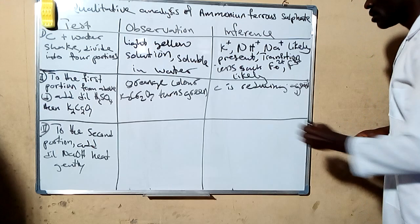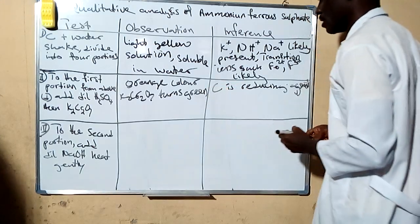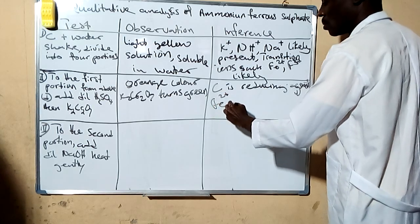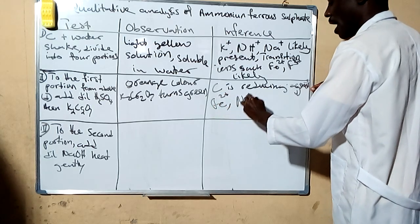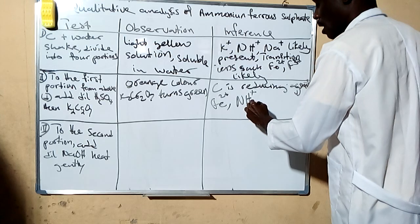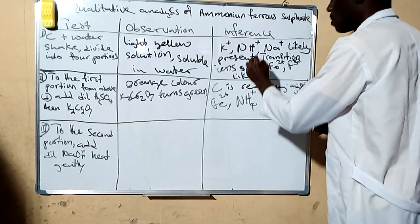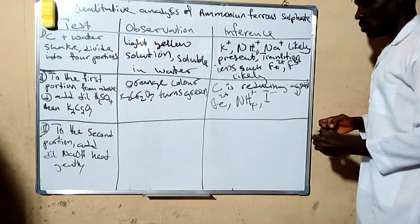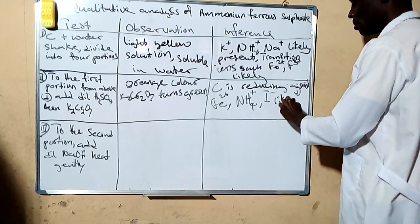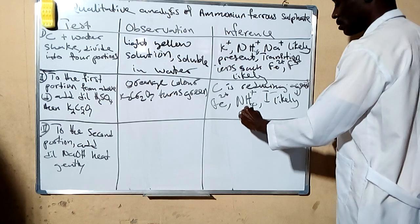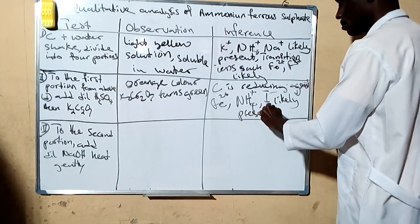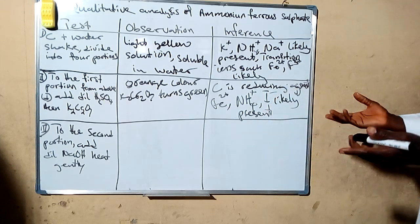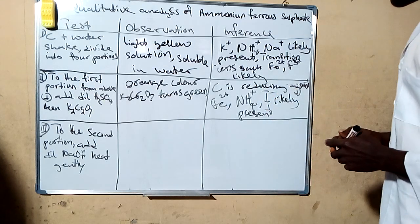When you add that, you notice that the orange color will turn green, which means that the C compound is a reducing agent. Being a reducing agent, it is likely to be iron 2, ammonia ion, or something like iodine ion likely present.